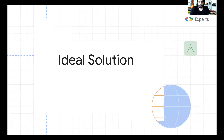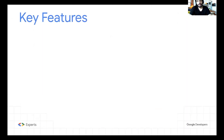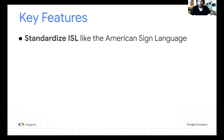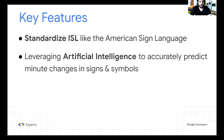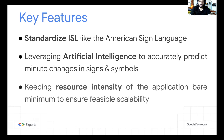Based on my research, the ideal solution had some key features. First, was to standardize ISL like American Sign Language, which is standardized within the US, so anyone who is deaf and mute can travel between different states without having to learn a different version of sign language. Also, can we leverage AI to accurately predict minute changes in signs and symbols? It's most important to keep the resource intensity to a bare minimum, to scale the model and reach people in rural areas. I did not use any internet, heavy GPUs, or external hardware because I wanted to keep this accessible to most people.